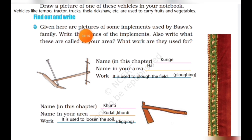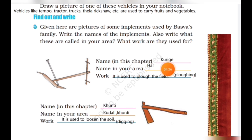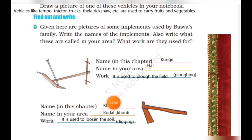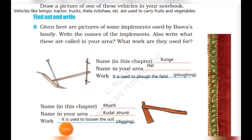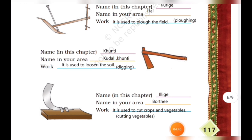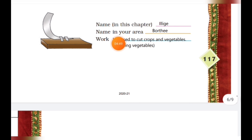Given here are pictures of some equipment used by Baswa's family. Write the names of the implements, what they are called in your area, and what work they are used for. In this chapter the plow is called Kurige; in our area it is called hull or plow — used to plow the field. The Kunti (also called Kudal in our area) is used to loosen the soil or for digging. The ilige (called Borthi in our area) is used to cut crops and vegetables.